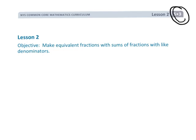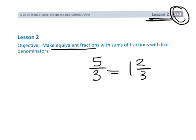This is 5th grade module 3, lesson 2, and we're going to be making equivalent fractions. This is going to be largely like the idea of taking an improper fraction and having students turn that into a mixed number. But the idea is we're going to do it by teaching number sense rather than just a rote algorithm. So teachers, if you don't exactly understand why we're doing it this way, it's because we're trying to build number sense rather than just teach kids a rule.